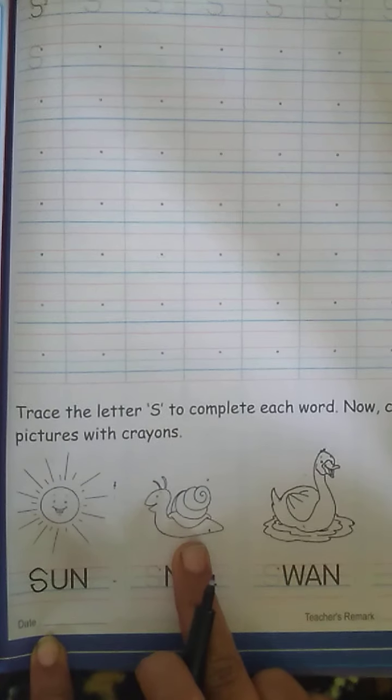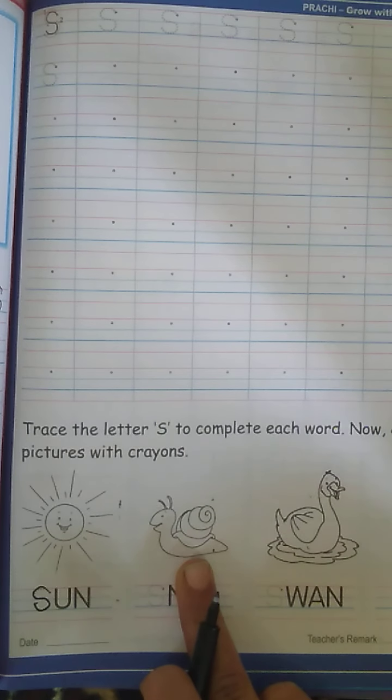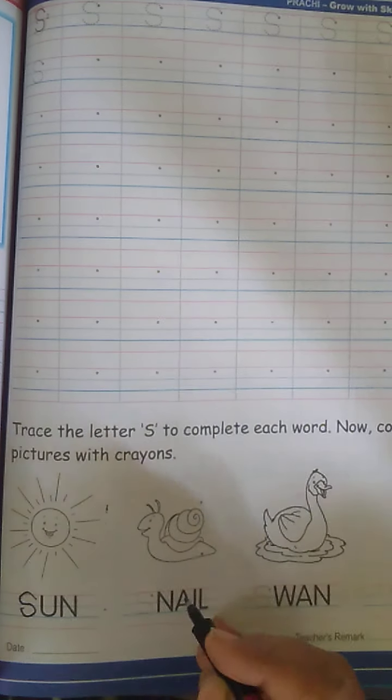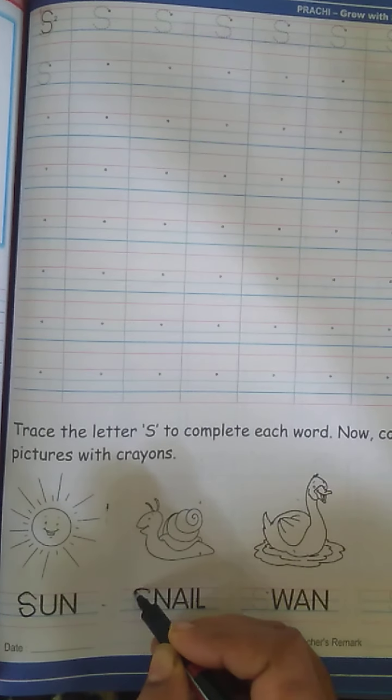And what is this? This is the snail. What is the spelling for snail? S-N-A-I-L. Snail. So, we will write the missing letter S.